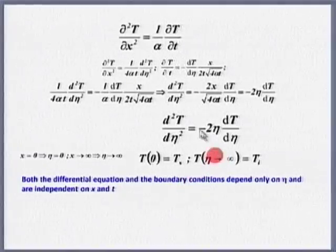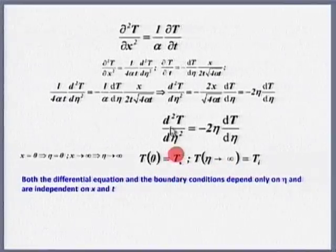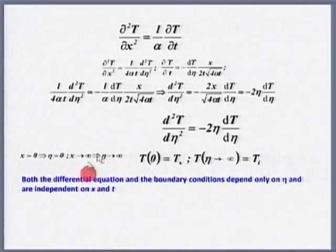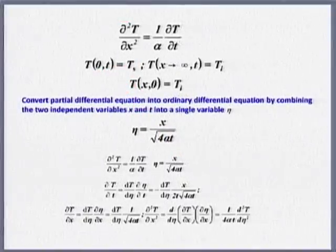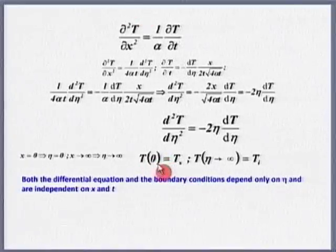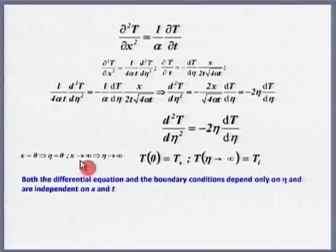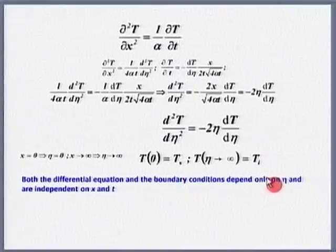Before solving, let us take care of the boundary conditions and initial condition — how do they get transformed? At x=0, η=0, and my temperature becomes T_s. At x tending to infinity, η tends to infinity, and T is T_i. These two boundary conditions are sufficient to solve this equation.